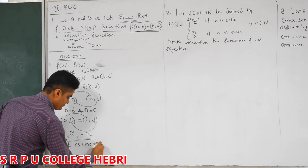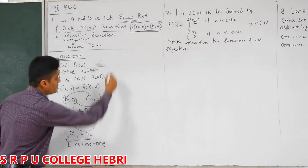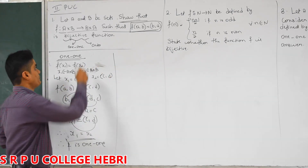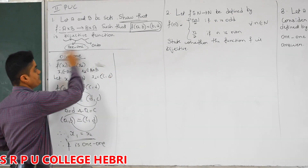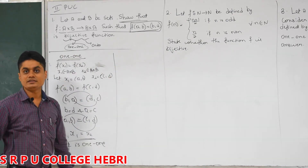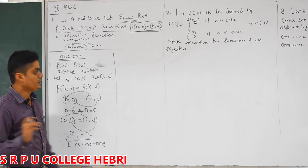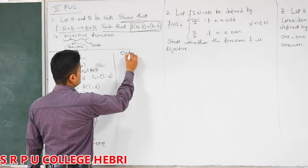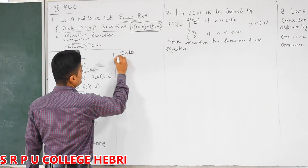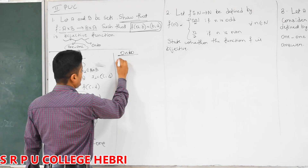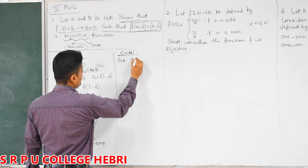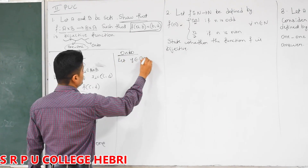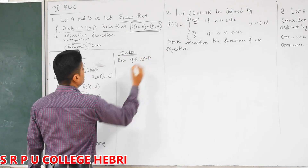One case is over. We just proved it is 1-1. Now we have to prove it is onto also. Same procedure. Take an element y belonging to the co-domain. The co-domain is B cross A.